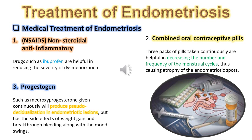Medical treatment of endometriosis. Number 1: Non-steroidal anti-inflammatory drugs such as ibuprofen are helpful in reducing the severity of dysmenorrhea. Number 2: Combined oral contraceptive pills — three packs of pills taken continuously are helpful in decreasing the number and frequency of menstrual cycles, thus causing atrophy of the endometriotic spots.